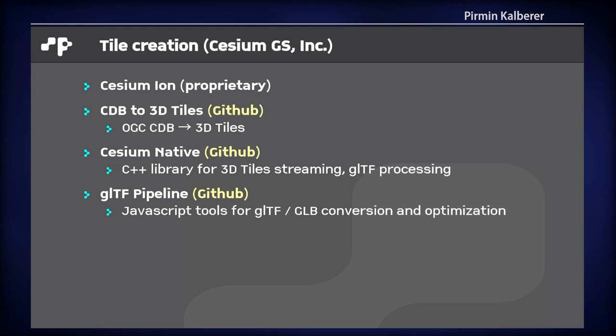The next topic is creation of 3D tiles, because either you have them or you want to create them. Usually you have your own data and you want to create 3D tiles, and that's the most difficult part — how to create good 3D tiles, because you have to create different LODs, simplification, and so on. Cesium provides a paid service called Cesium Ion that creates 3D tiles. In the open source world, there are also implementations, including a CDB to 3D Tiles converter from Cesium, plus a C++ library and JavaScript pipelines for working with 3D tiles.